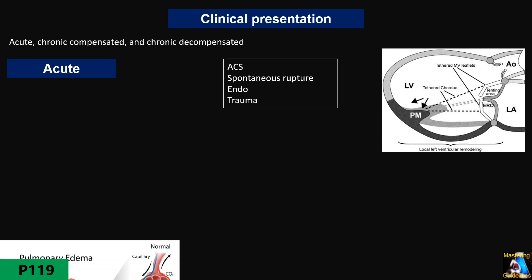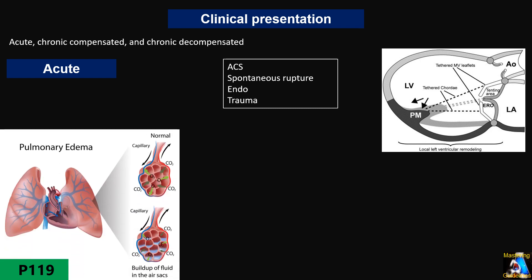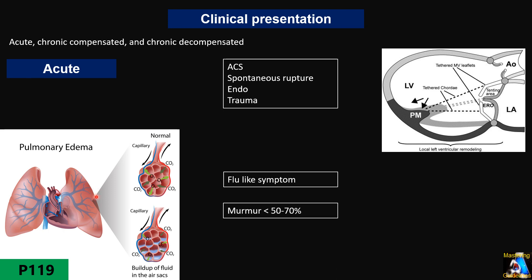In acute coronary syndrome, most of the symptoms across all those causes are related to increased left atrial pressure, and ultimately increased capillary wedge pressure and pulmonary edema. The most significant presentation of acute MR is a flu-like symptom, shortness of breath, and cough with or without mucus. The most significant finding is a murmur.